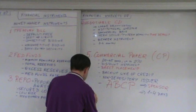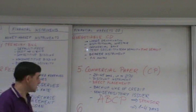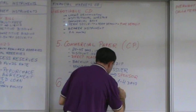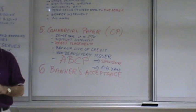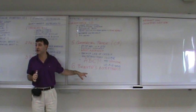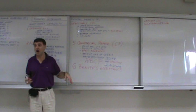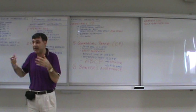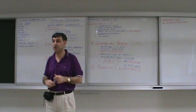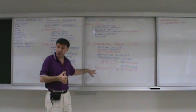Number six: Banker's acceptance. It is actually tricky and confusing — back in the old days I had a hard time understanding it, but it's actually very simple. First of all, it is issued by non-financial institutions — just businesses. Like our university, or Acer Corporation, Asus Corporation, or Kia Corporation — any business or company will issue this instrument.